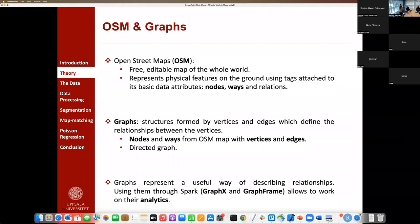Then we have the concept of graphs. They are structures formed by vertices and edges, and the edges represent the connection between the vertices. It's logical to think how the notions of nodes and ways from OpenStreetMaps map very nicely with the idea of vertices and edges from graphs. We will be using directed graphs, which are graphs whose edges have directions. Graphs represent a very useful way of describing relationships in many different scenarios. Using them through Spark, using the GraphX and GraphFrames packages, allows us to work on graph analytics.